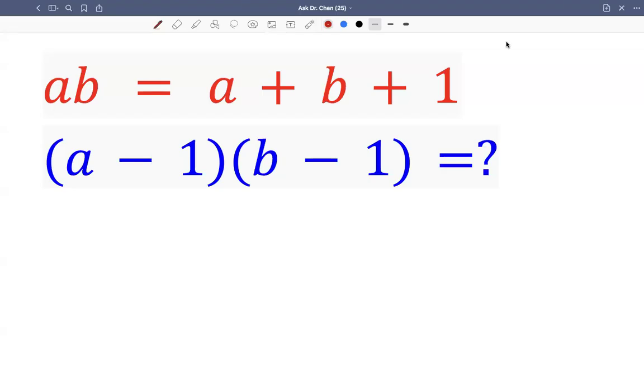Let's see this question. We're given the relationship between AB and A plus B - they differ by one. So AB equals A plus B plus one.